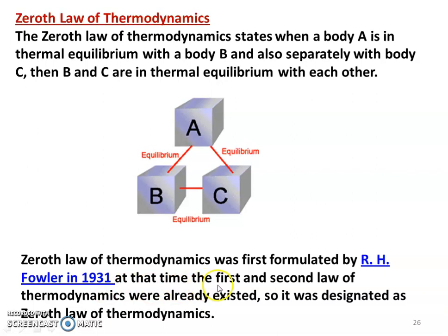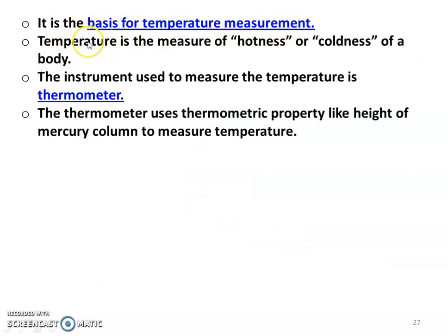Since the first and second laws of thermodynamics already existed — they were invented in the 1870s — when Fowler proposed this law in 1931, the scientists felt it should be first, but since there was already a first law, it was named the zeroth law. It is the basis for temperature measurement. Temperature is a measure of the hotness or coldness of a body. The instrument used to measure temperature is a thermometer, which uses thermometric properties like the height of a mercury column.